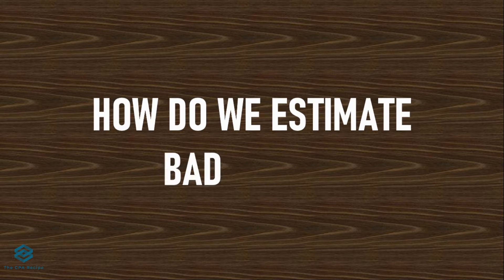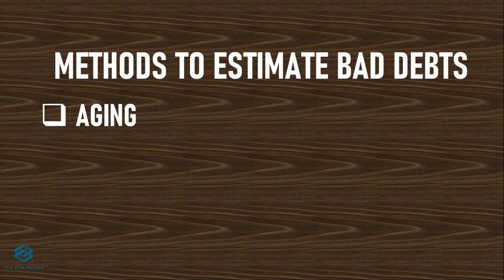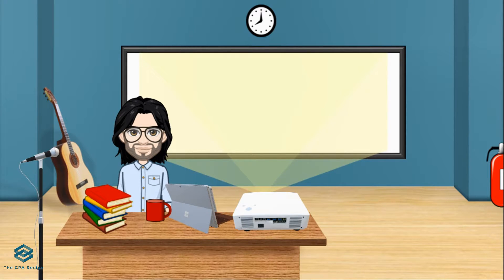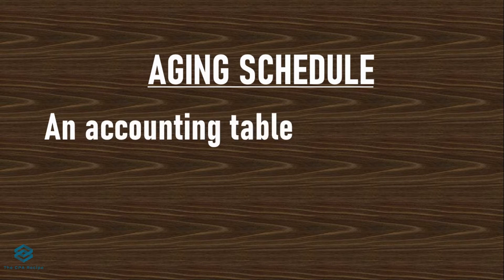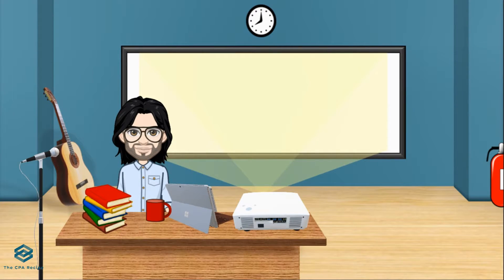So the question is: how do we estimate bad debts? There are three ways: aging of accounts receivable, percentage of accounts receivable, and percentage of sales. Let's discuss aging of accounts receivable first. In actual accounting, we have an aging schedule where we classify customer accounts based on how old they are — measuring how long each customer account has been unpaid. You can also classify them as not yet due or past due based on the credit terms you offer.